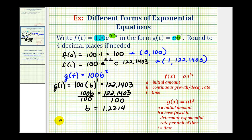So that means g of t, the function we're trying to find, is equal to 100 times our base of 1.2214 raised to the power of t.